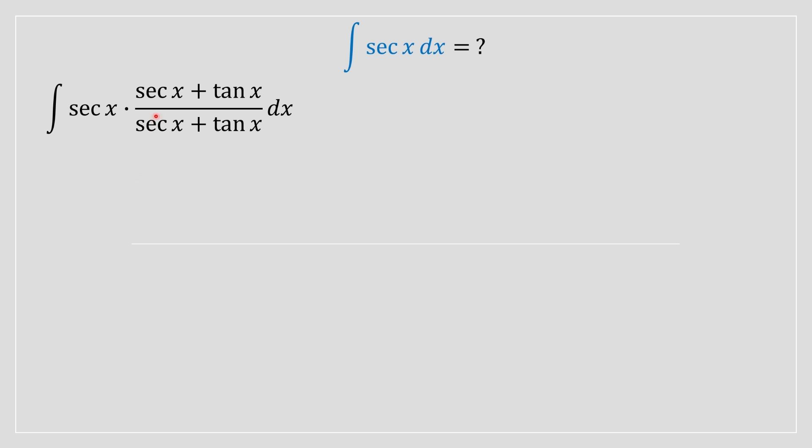The way we do it is we introduce a fraction which is equal to one: sec x plus tan x in the numerator and denominator respectively. This sec x plus tan x is going to be our u variable.